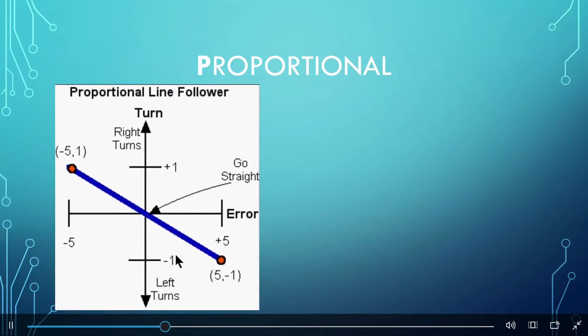Based on the light value, the turn values change as well. For example, if the light sensor reading indicates we are close to the line, we do a small turn, but if we are farther away from the line, we make a large turn.